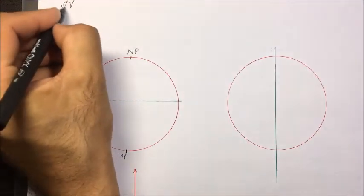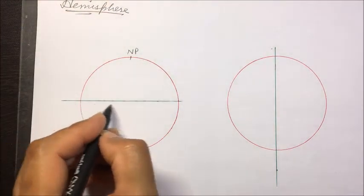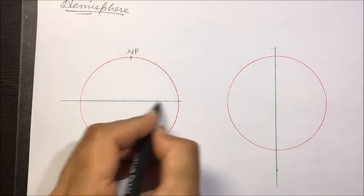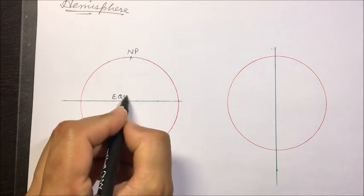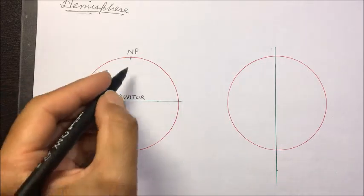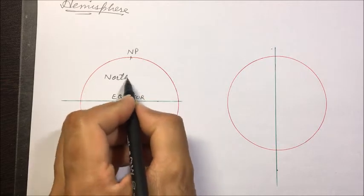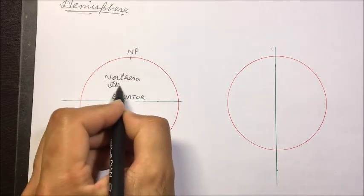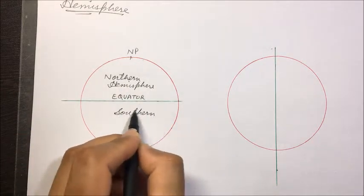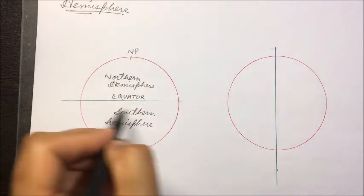Now we will be discussing hemispheres. If we draw an imaginary line around the earth such that it is equally distant from the north pole and the south pole, this line is called the equator. This line divides the sphere into two equal halves, which we call hemispheres — the northern hemisphere and the southern hemisphere.